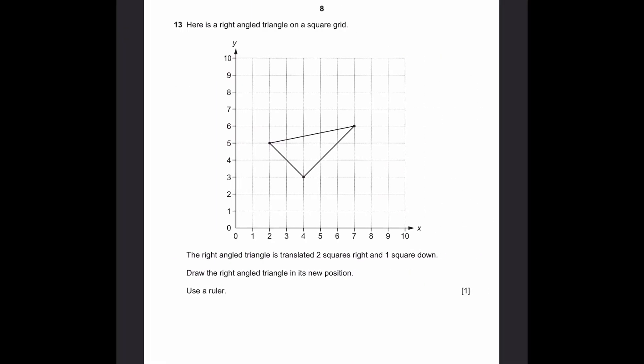Question 13. Here's a right angle triangle on square grid. The right angle triangle is translated two squares right, one square down. Draw the right angle triangle in a new position. Use the ruler. So two squares right, one, two. Let's just take this point. One square down. Comes over here. So that point's over here. Now the other points we draw using the same distance here. This one will be here. And this one will be here. Now we simply need to use a ruler to draw this. Make sure your lines are all straight. That's the answer.